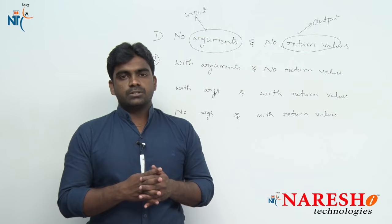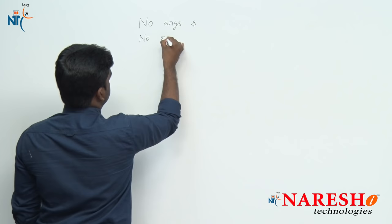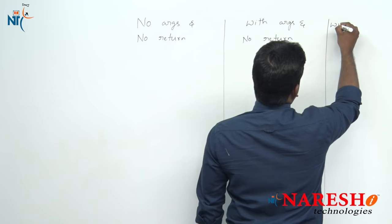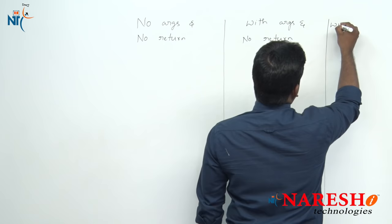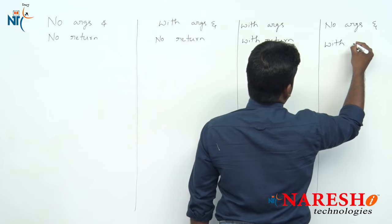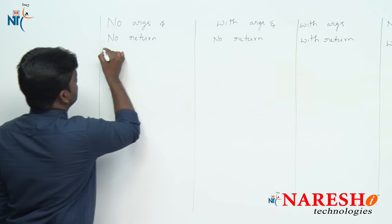The function's behavior depends on the method syntax. Now we will discuss all four classifications. The first is no args and no return values. Second is with args and no return values. Third is with args and with return values. And the last one is no args and with return values.